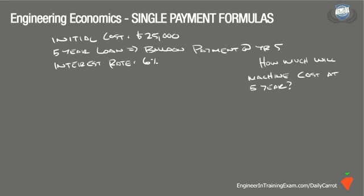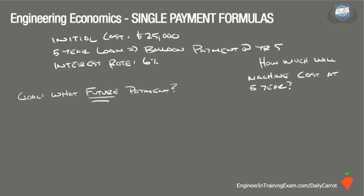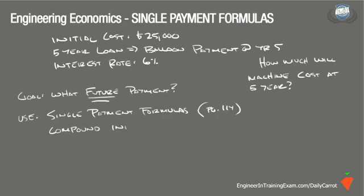The question is asking what the future balloon payment would be if the company were to take a five-year, $25,000 loan today with a 6% annual interest rate. Like any of these single payment problems, we can determine this in one of two ways: either by using the single payment compound amount formula found in the table on page 114 of the NCEES Supplied Reference Handbook, or using the functional notation version of the equation and referencing the compound interest tables starting on page 114.